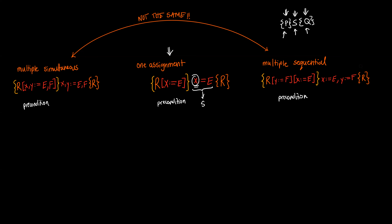When you have one assignment you're only assigning one variable, and you have your postcondition R. In order to calculate the precondition, we take the assignment and apply it to the postcondition. That should result in an expression we can use as a valid precondition for a single assignment Hoare triple. The reason we apply the substitution to the postcondition instead of the precondition is that in the initial state we haven't performed the assignment yet, so x has not yet been modified to contain e.